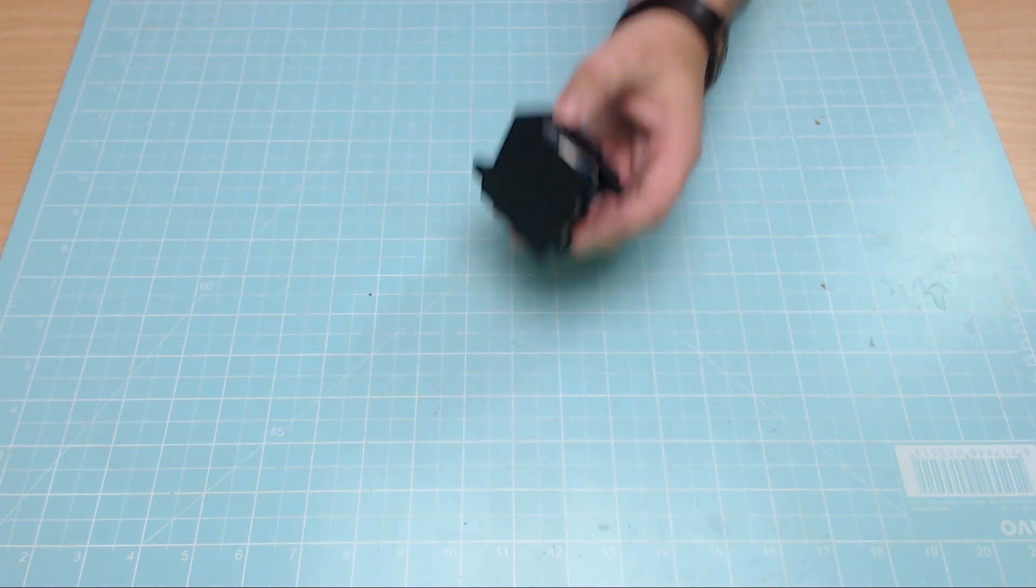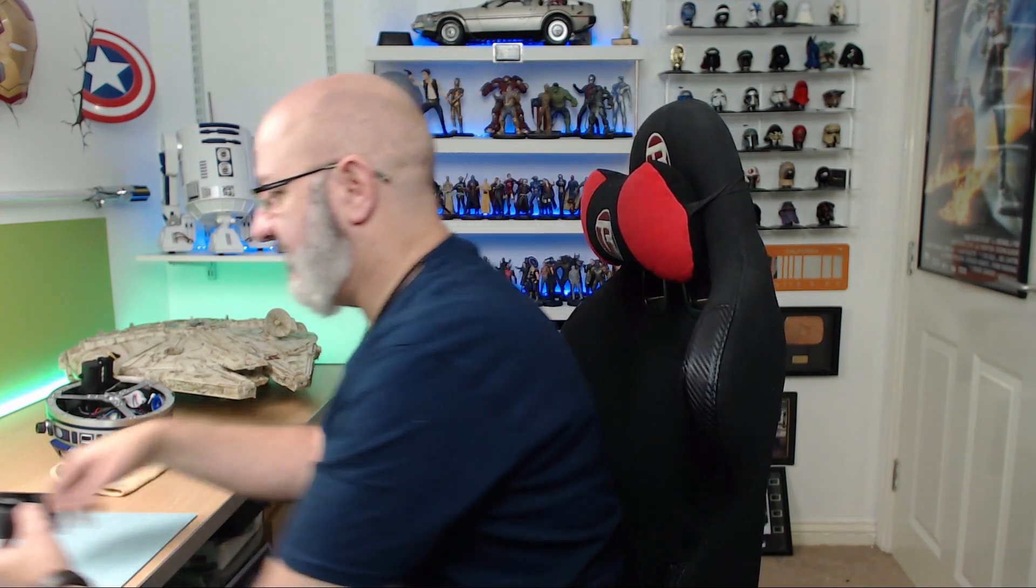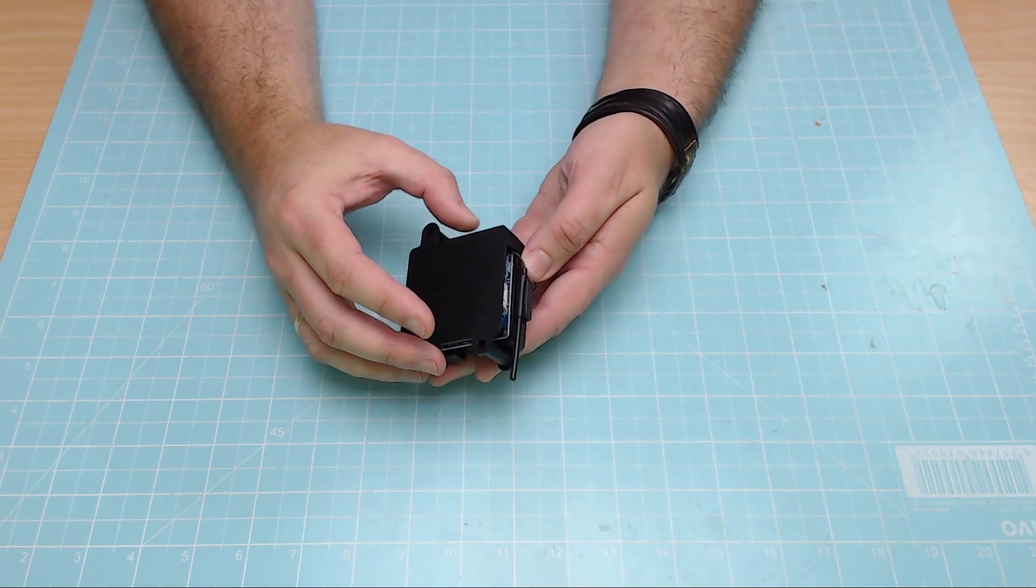But, you know, for the sake of being safe, as you can see, my table here has got a metal rim, which I've earthed. So I touch this just before I touch anything, just in case.